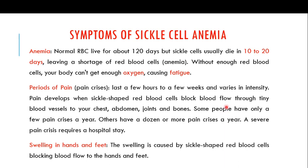When we talk about the symptoms of sickle cell anemia, the first important symptom is anemia, which means a lower number of red blood cells. Normal red blood cells live for about 120 days, but sickle cells usually die in 10 to 20 days, leaving a shortage of red blood cells, which is called anemia.